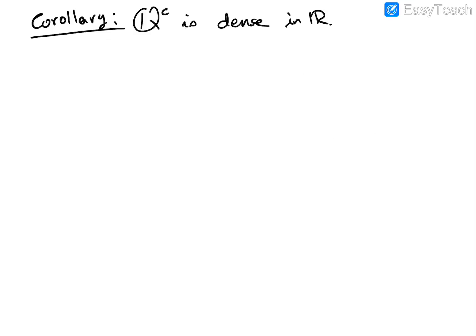So these are the things that we use. One, we're going to use Q is dense in ℝ. And two, the square root of 2 is irrational — we proved that.